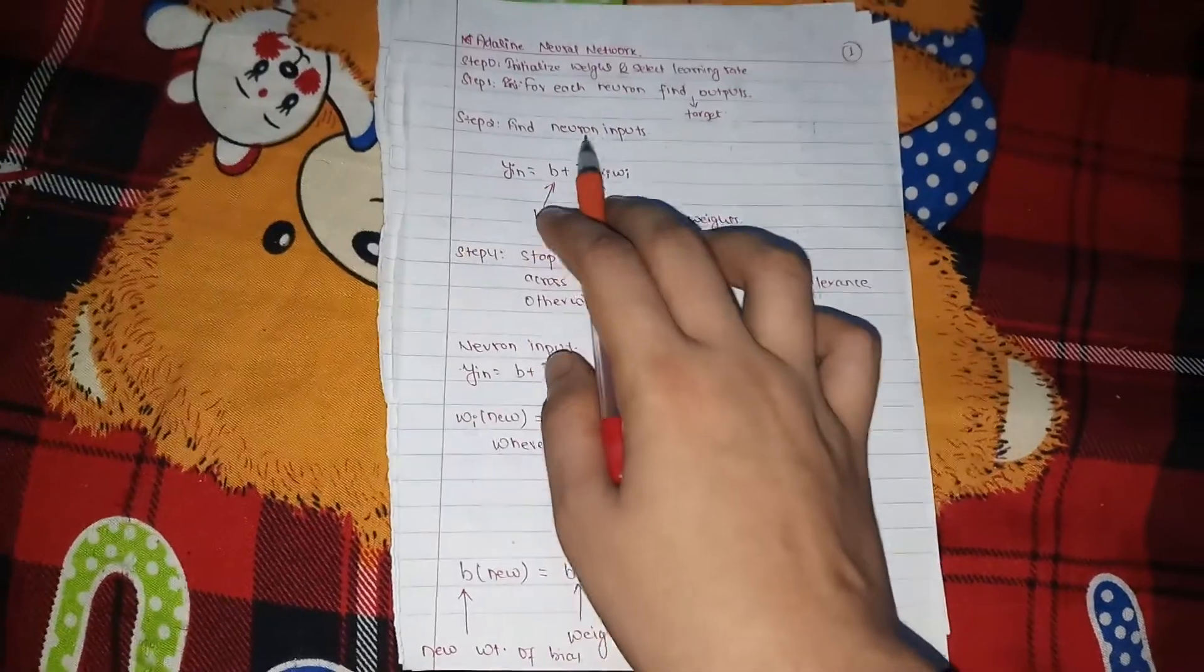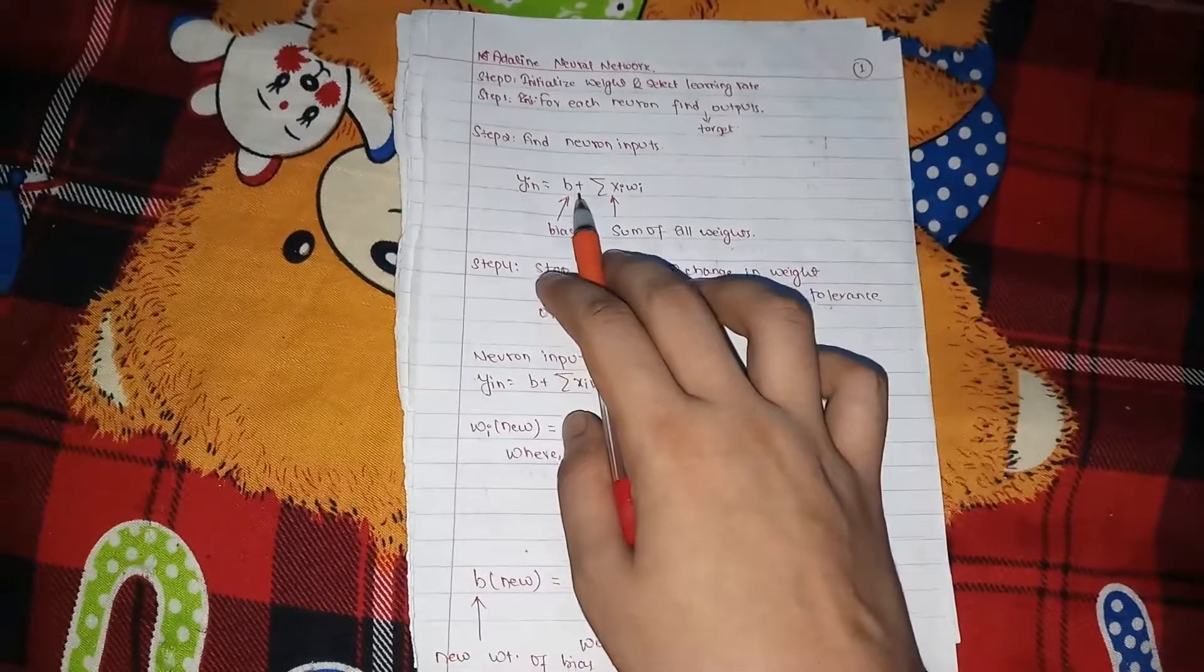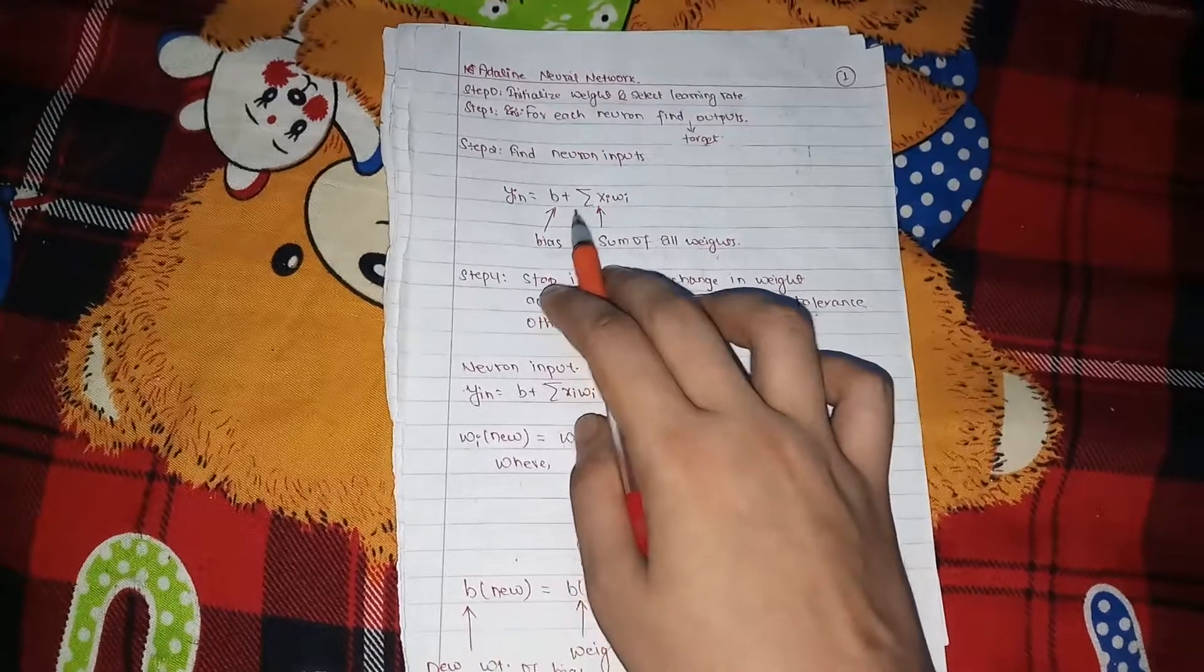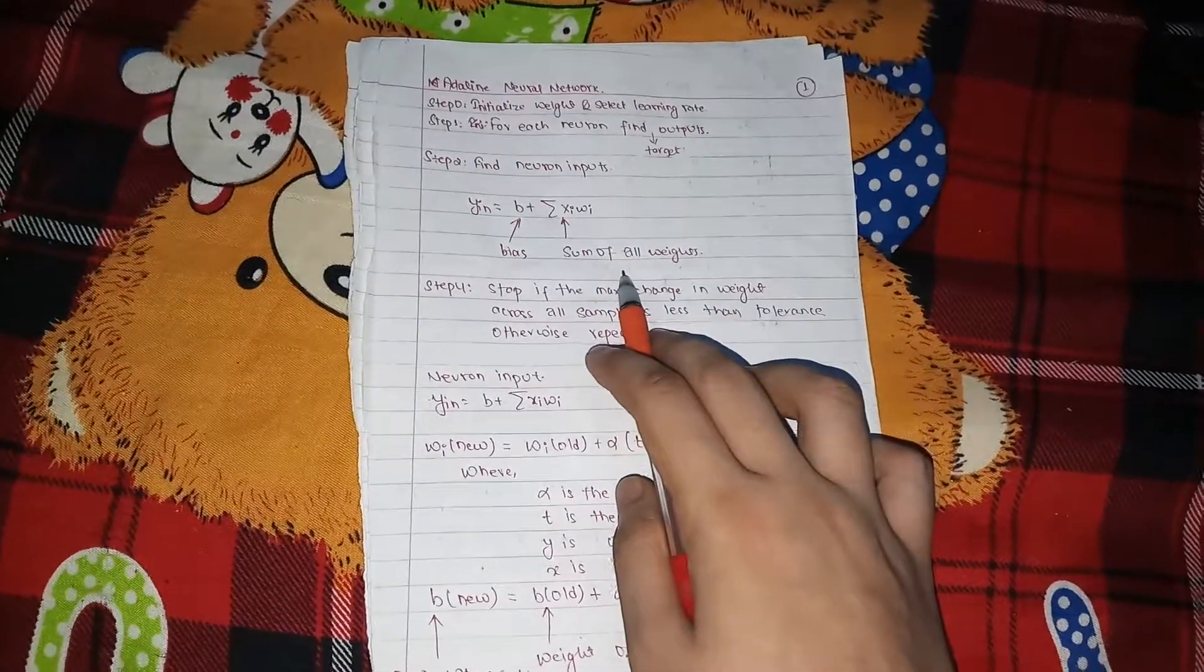Then find the neuron input, that is the output of the neuron. Y in is equals to B, that is the bias, and the summation of input times the weight S, sum of all the weights.